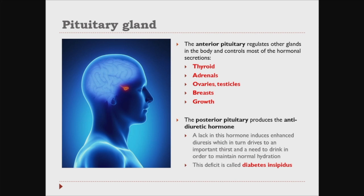The posterior pituitary produces the anti-diuretic hormone, and as the name says, a lack of this hormone induces enhanced diuresis — meaning that you urinate more — which in turn drives an important thirst and a need to drink in order to maintain normal hydration. This deficit is called diabetes insipidus.